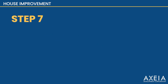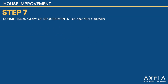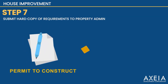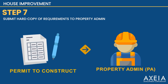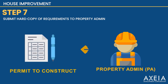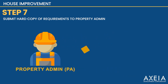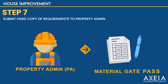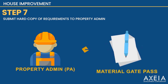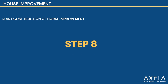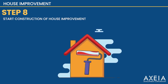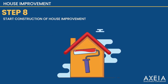Step 7. Once the permit is secured, submit to Property Admin the hard copy of the requirements uploaded in the Homeowner's Buyer's Portal for the issuance of Material Gate Pass. And Step 8, you may now start construction of house improvement.